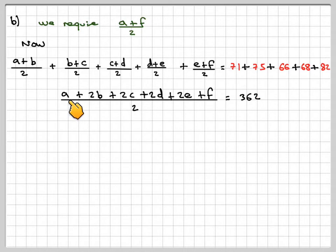Here we can make out (A+F)/2, which is what we're required to find. And then 2 goes into 2, so we're just left with (A+F)/2 + B + C + D + E = 362.